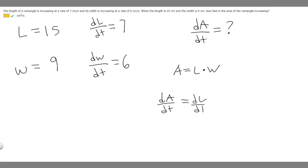So dL/dt, and then we just multiply it by W. So we multiply it by W, and then we plus the derivative of W with respect to T, so dW/dt, and then we multiply it by L. And so we have all these variables over here, so all we got to do is just plug it in now.